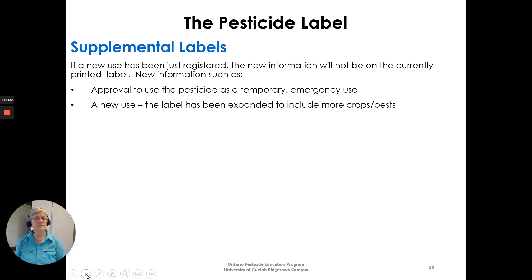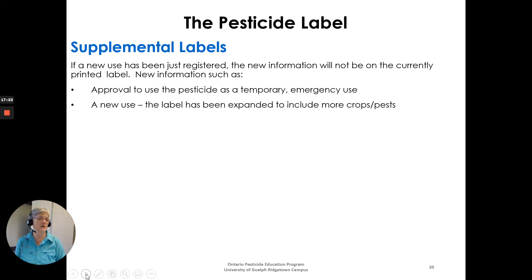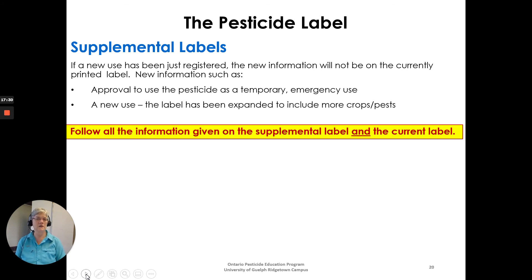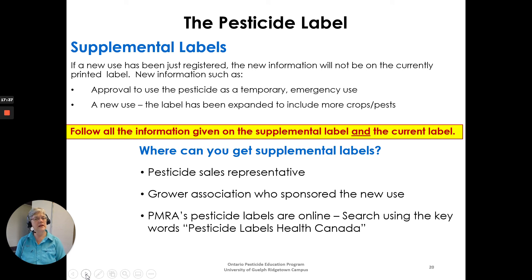If a new use has just been registered, rather than reprinting the whole label, the new information will appear on a supplemental label — which goes alongside the original current label. Follow all information on both the supplemental and current labels. You can get supplemental labels from your pesticide sales representative, grower associations, or through PMRA's online pesticide label search.